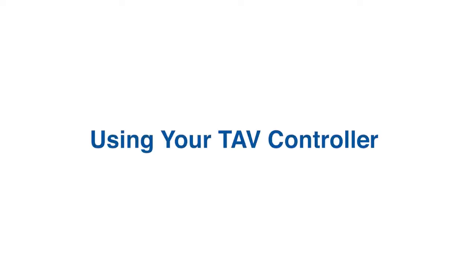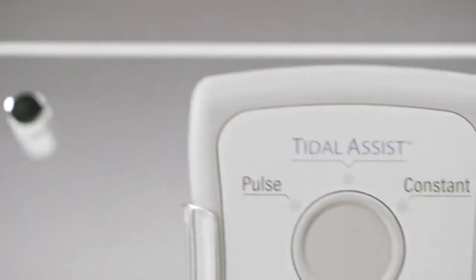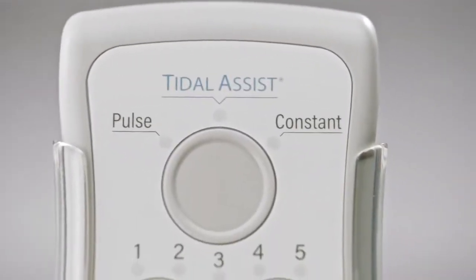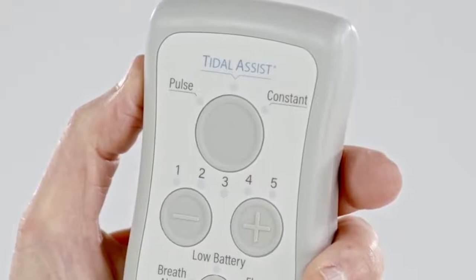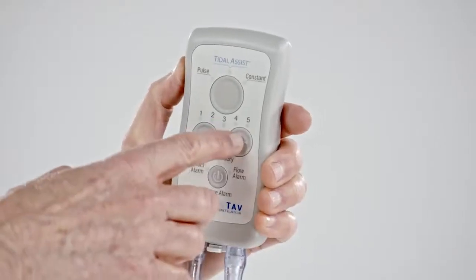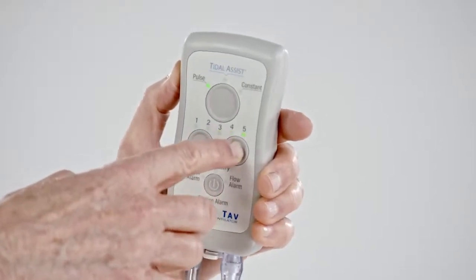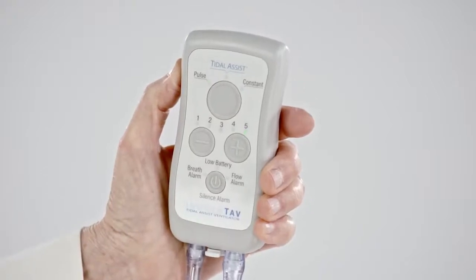Now I'll show you how to use your TAV controller. There are three settings: Pulse, Tidal Assist, and Constant. Pulse is the default mode, which helps to conserve oxygen. Use the plus and minus buttons to set the oxygen level from 1 to 5, with 5 being the highest.